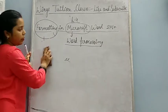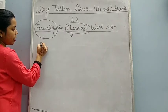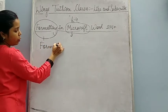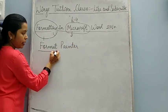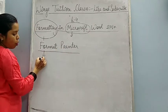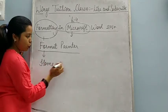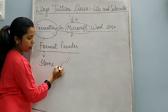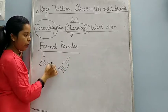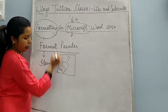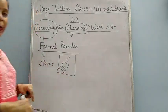The first topic I am going to tell you is Format Painter. This Format Painter button is present on the Home tab. It is of a brush shape — a brush-shaped button on the Home tab. That is known as the Format Painter tool or Format Painter button.